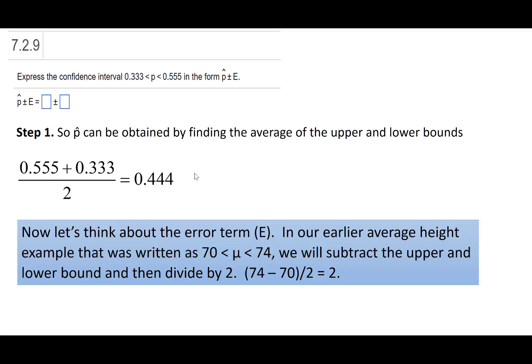So now to get the E part. Let's think about this back with our nice integers on height. We have 70 less than μ less than 74. So we're going to subtract the upper and lower bound. So we'll say 74 minus 70.